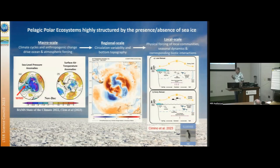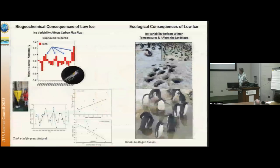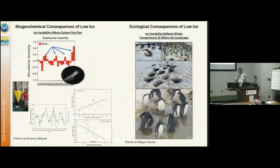That ties really nicely with the dry valley work. Those two processes influence all the interactions in terms of the physics driving the food web, including the phenology, which has been a big focus — how these large-scale processes are altering the phenology. It's a case example of how the variability in sea ice driven by the Amundsen Sea Low impacts things in ways we don't expect.